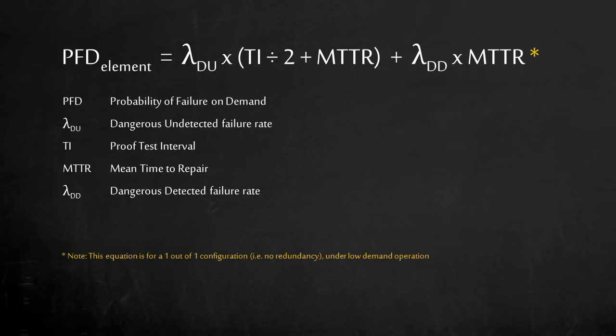This equation only applies to components under low-demand operation with a 1 out of 1 voting logic, which means there is no redundancy. There are other equations for different voting logic, such as 1 out of 2 or 2 out of 3. There are also different equations for safety functions used continuously which is considered to be high-demand operation.